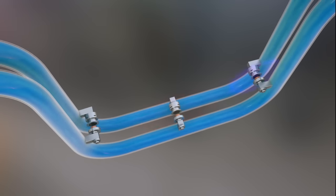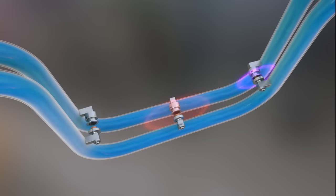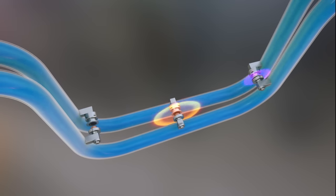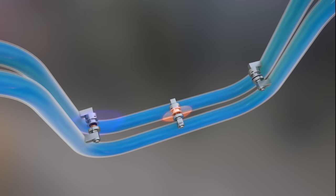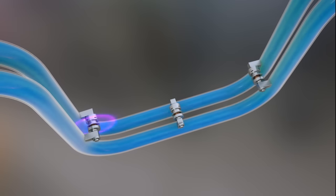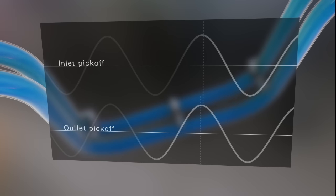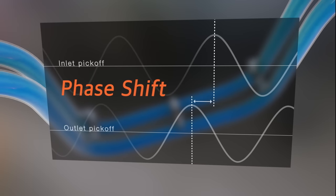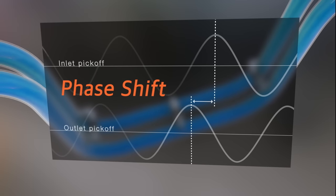When fluid is moving through the sensor's tubes, Coriolis forces are induced in both flow tubes. These forces cause the flow tubes to twist in opposition to each other. As a result of the twist in the flow tubes, the sine waves are now shifted in phase with respect to each other and are asynchronous.